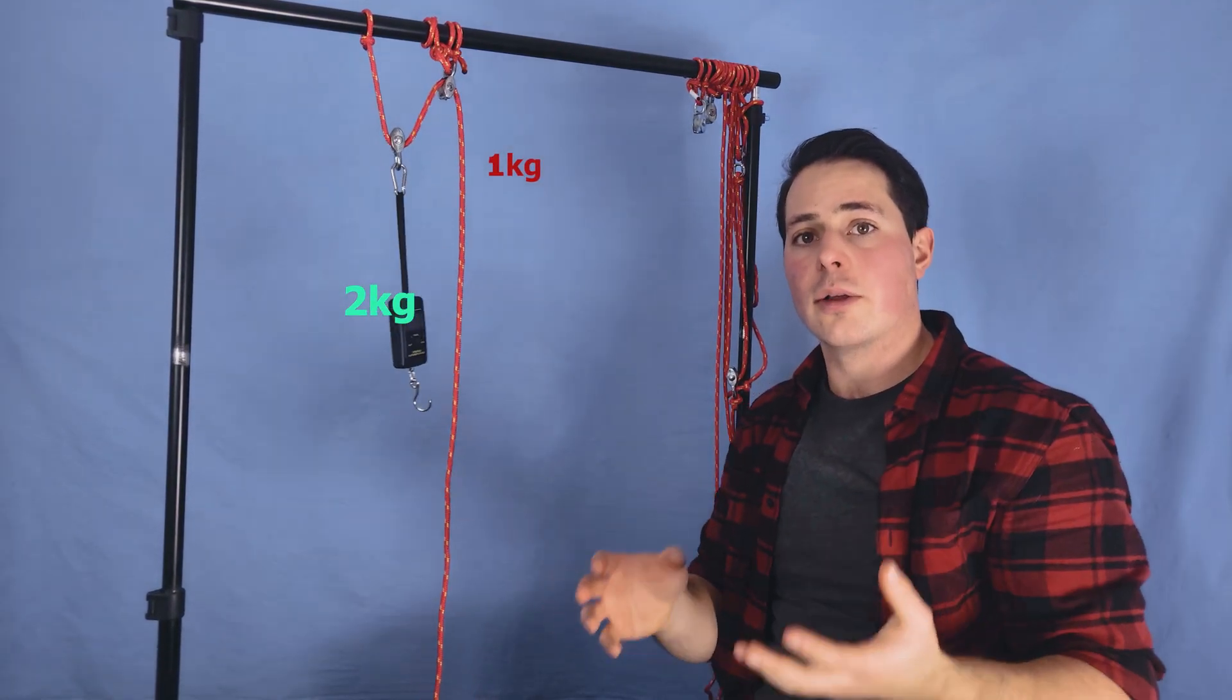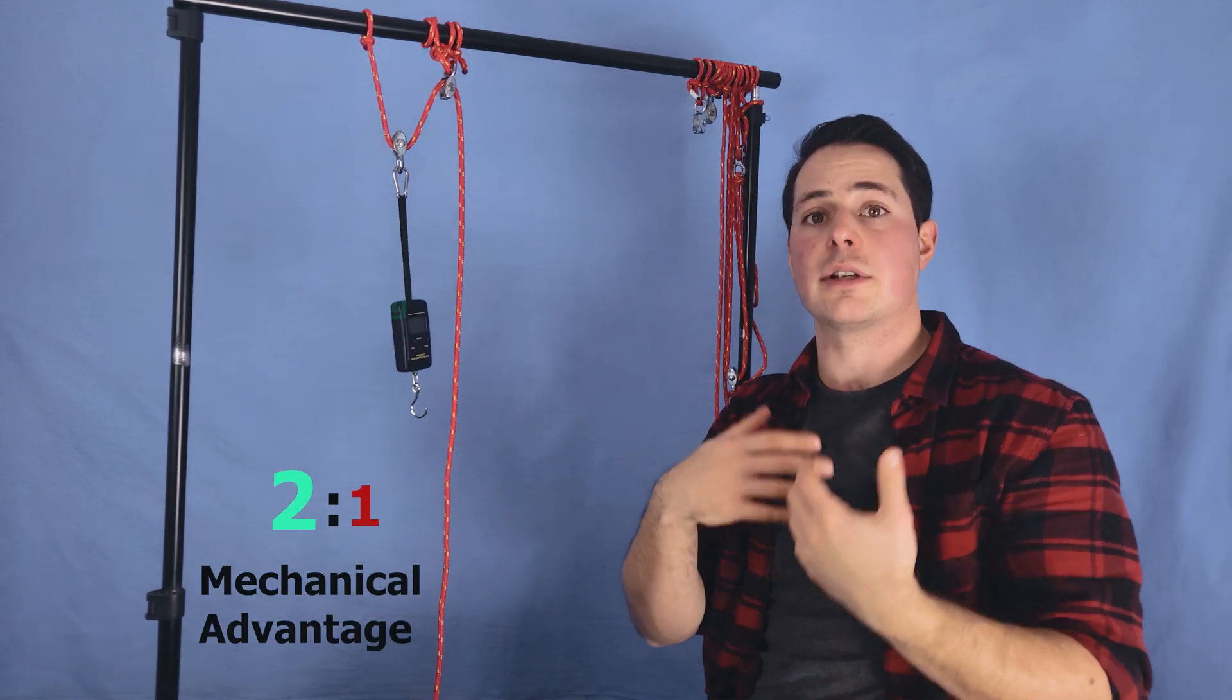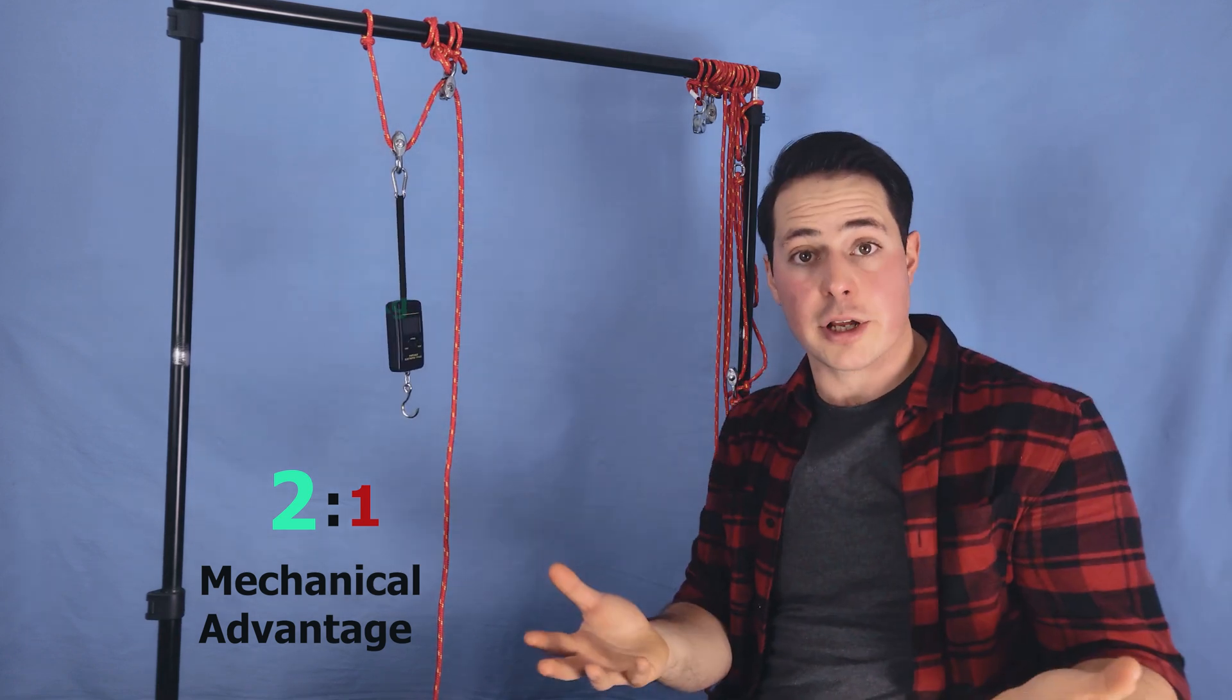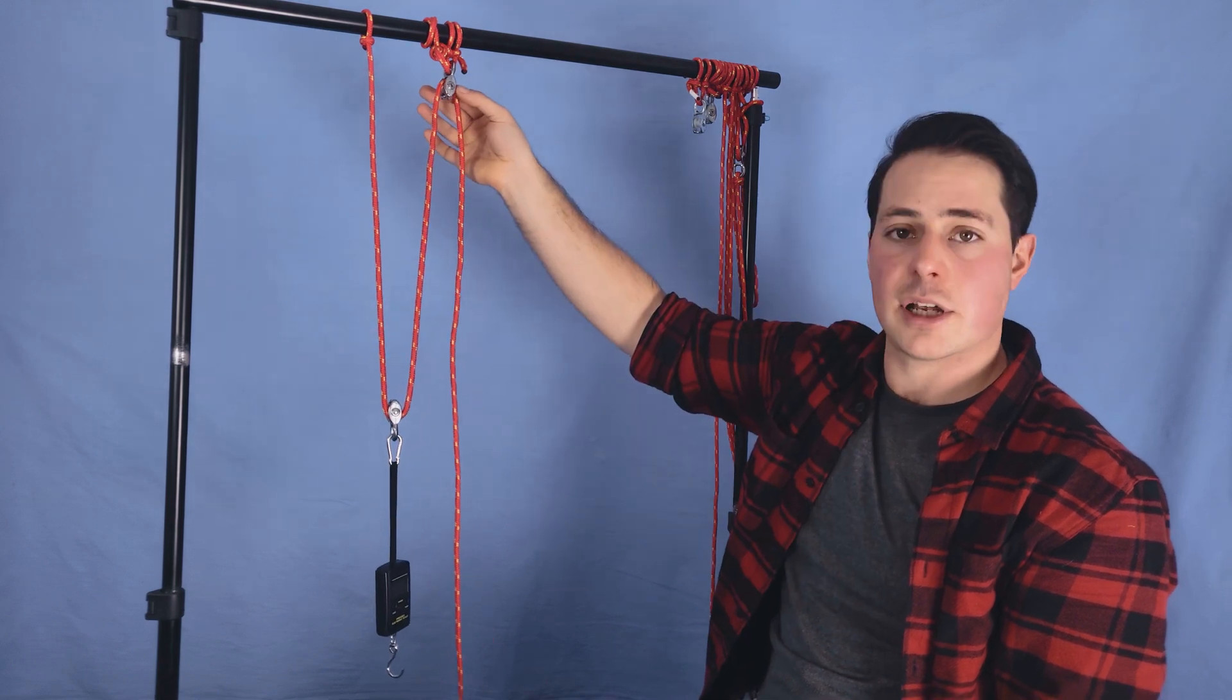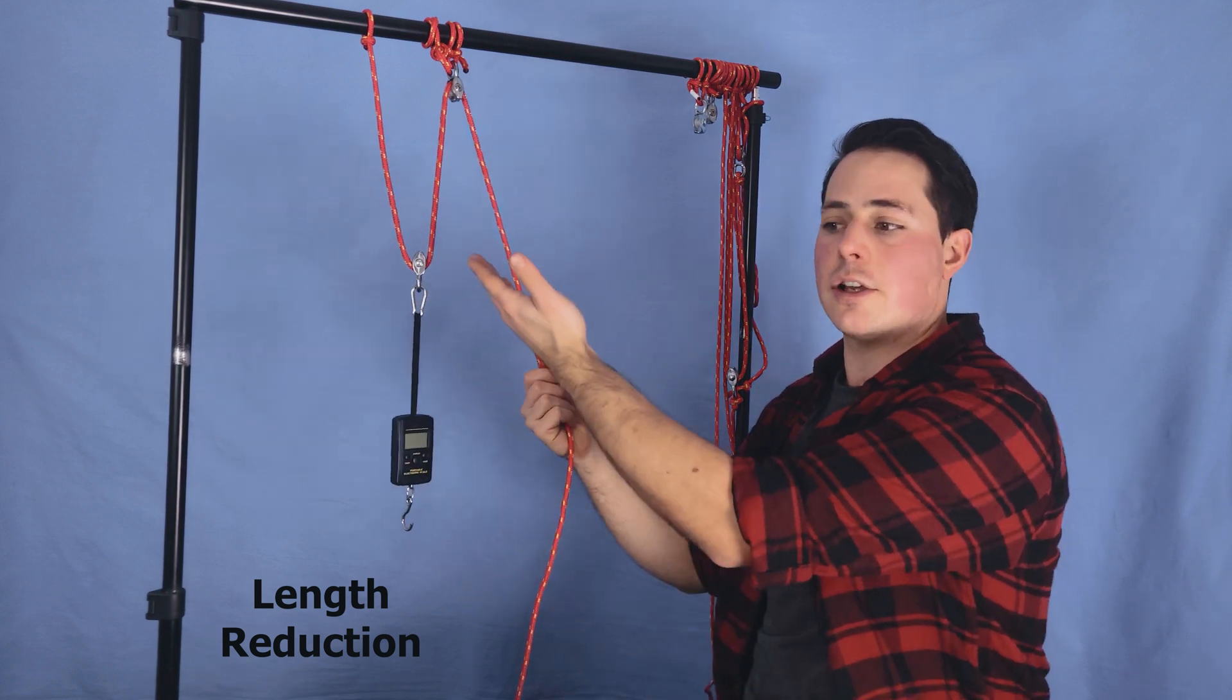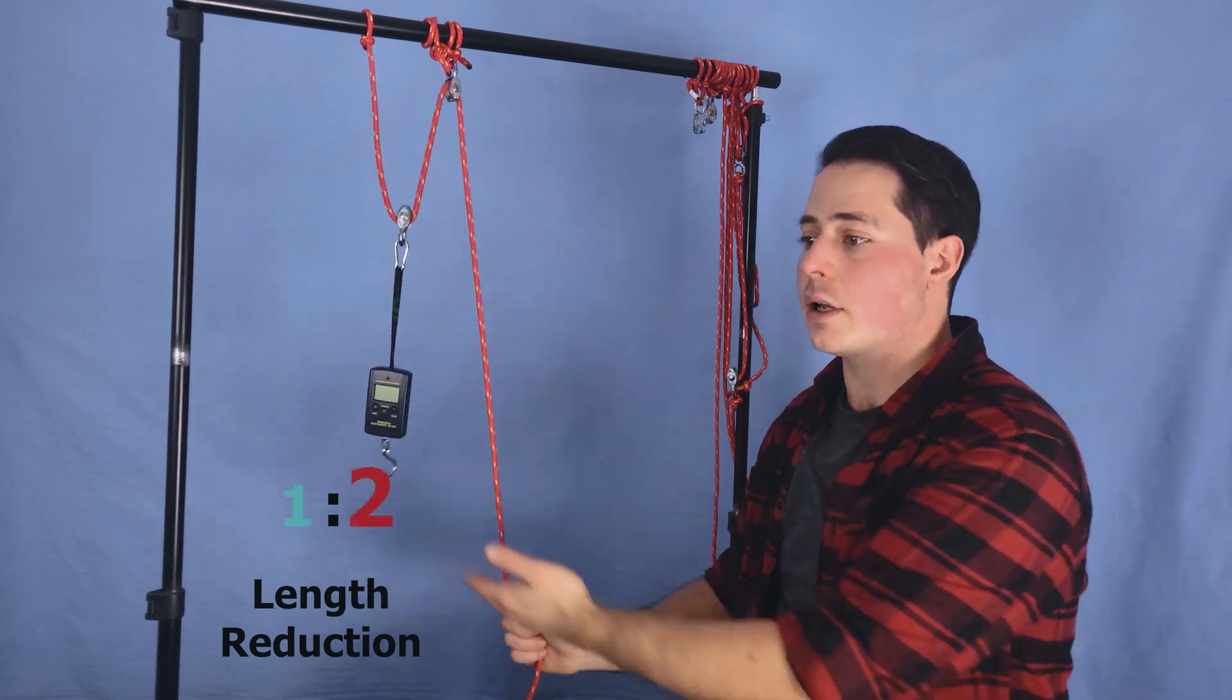This is what's called mechanical advantage. We have a mechanical advantage of two because there is a force multiplication of two within the system. However there's always a trade-off with mechanical advantage and in this case we have a length reduction. So for every meter I would pull here I would only lift the object half a meter. If I pull with two meters the object lifts one meter. But why does there have to be a trade-off anyway?